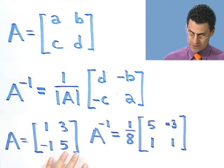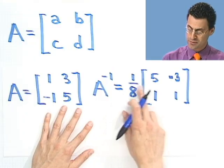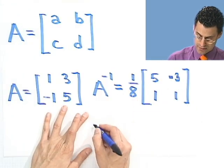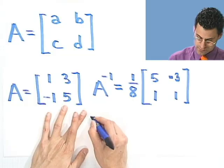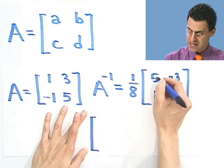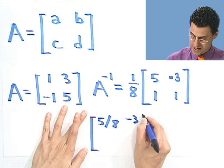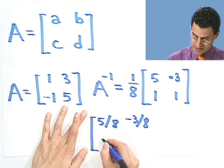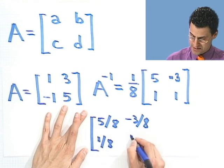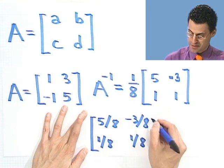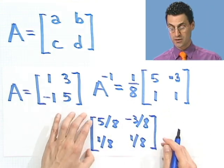And remember what you do when you have a scalar multiple times a matrix. What you see is just 1 eighth times each and every term. So I see 5 eighths. I see minus 3 eighths. I see 1 eighth. And I see 1 eighth. I just took every single term and multiplied it through by 1 eighth. And that should equal the inverse.